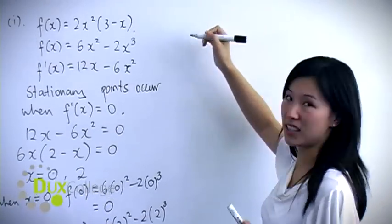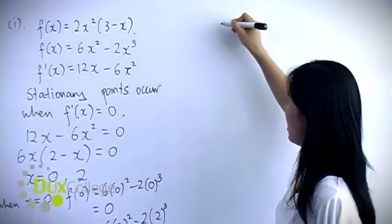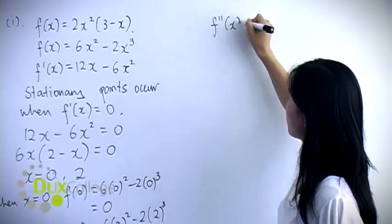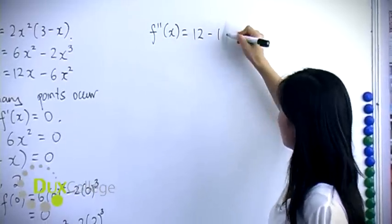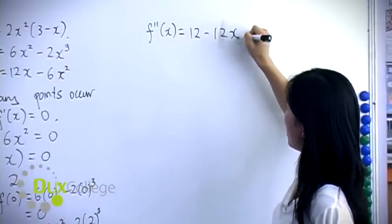So let's use the second derivative because that's easier in this case. So f''(x) = 12 - 12x.